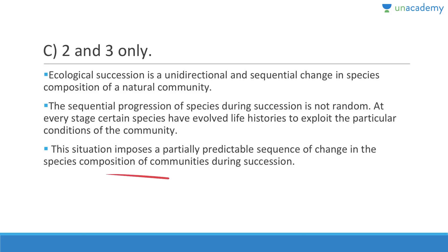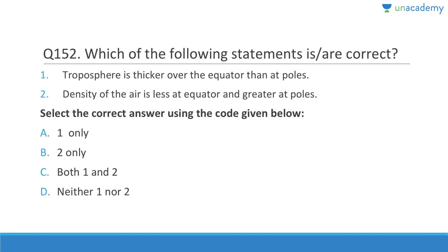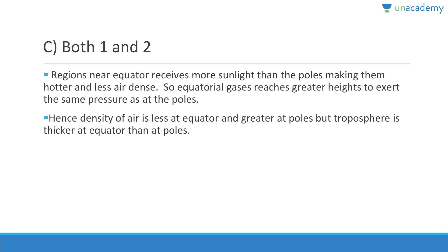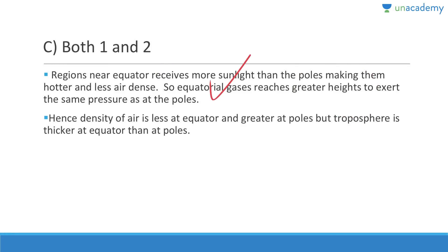The troposphere is thicker over the equator than at the poles. Regions near the equator receive more sunlight, making them hotter and less air-dense, so equatorial gases reach greater heights. The density of air is less at the equator and greater at the poles. The answer is C — both one and two.